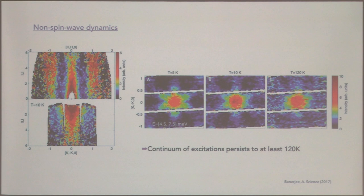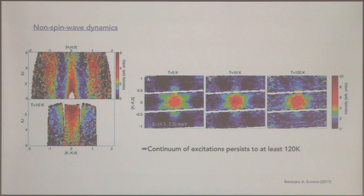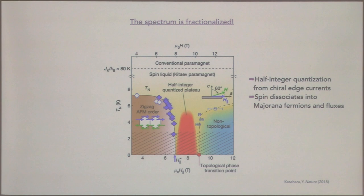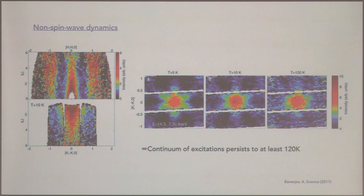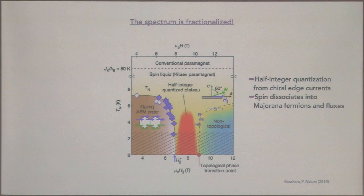Looking more into this material via neutron scattering measurements, what they find is basically not what you would expect from spin wave theory — which would give six-fold rotational scattering — but instead you have this bright continuum of excitations centered around the gamma point. Those are the type of excitations you would expect from Majorana excitations in a Kitaev spin liquid. Importantly, those excitations seem to persist all the way up to 120 Kelvin, which is in line with the Kitaev coupling found from many different techniques.